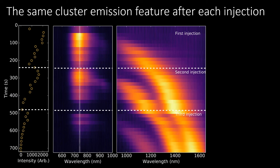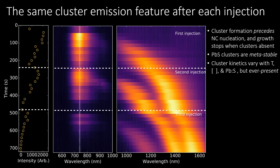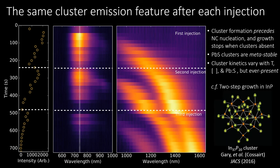Going further, we performed three sulfur injections and each time observed a rise of the 735 nm emission feature, followed by the formation of growing nanocrystals. The 735 nm feature then decayed without any change in shape or position until the reaction was complete. Thus, we named this feature a pre-nucleation cluster, with the characteristics that their formation precedes nanocrystal nucleation, growth stops when clusters are absent. The clusters are metastable and eventually convert or are consumed to form PbS nanocrystals. They are present even if we change the synthetic conditions such as temperature, ligand, concentration, and others. This behavior is reminiscent of the Cossard group's identification of an indium phosphate cluster.